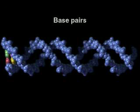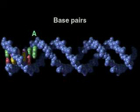Now let's look at the crossbars connecting the backbones. Each crossbar is a hydrogen-bonded pair of bases, one from each DNA strand. An adenine is always paired with a thymine, and a guanine with a cytosine.